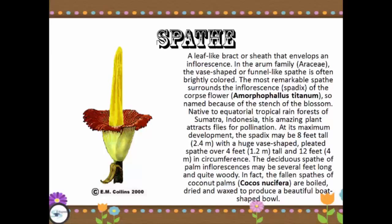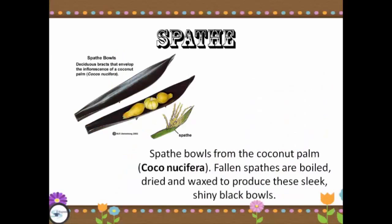Because of the stems of the blossom, native to the equatorial tropical rainforest of Sumatra, Indonesia, this amazing plant attracts flies for pollination. At its maximum development, the spathe may be 8 feet tall (2.4 meters), with a hood-shaped pleated spathe over 4 feet (1.2 meters) and a sole of 12 feet (4 meters) in circumference. The deciduous spathe upon inflorescence may be several feet long and quite woody. In fact, the fallen spathes of coconut palms are balled, dried, and waxed to produce a beautiful ball-shaped bowl — spathe balls from the coconut palm — and fallen spathes are balled, dried, and waxed to produce these lake's shiny black flowers.